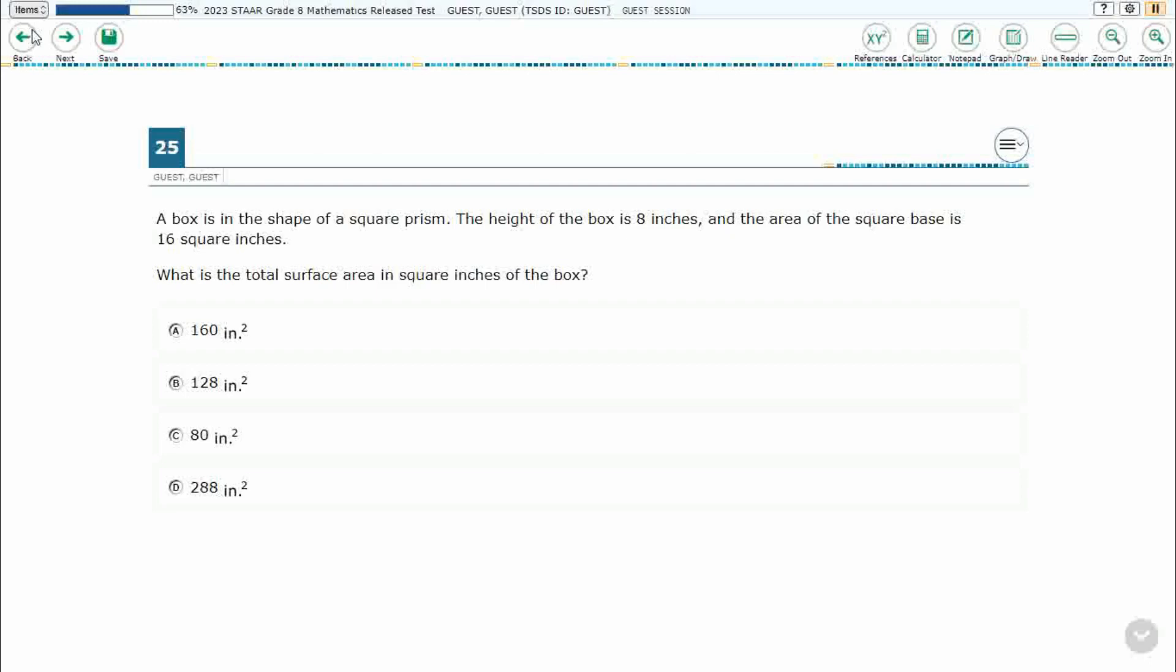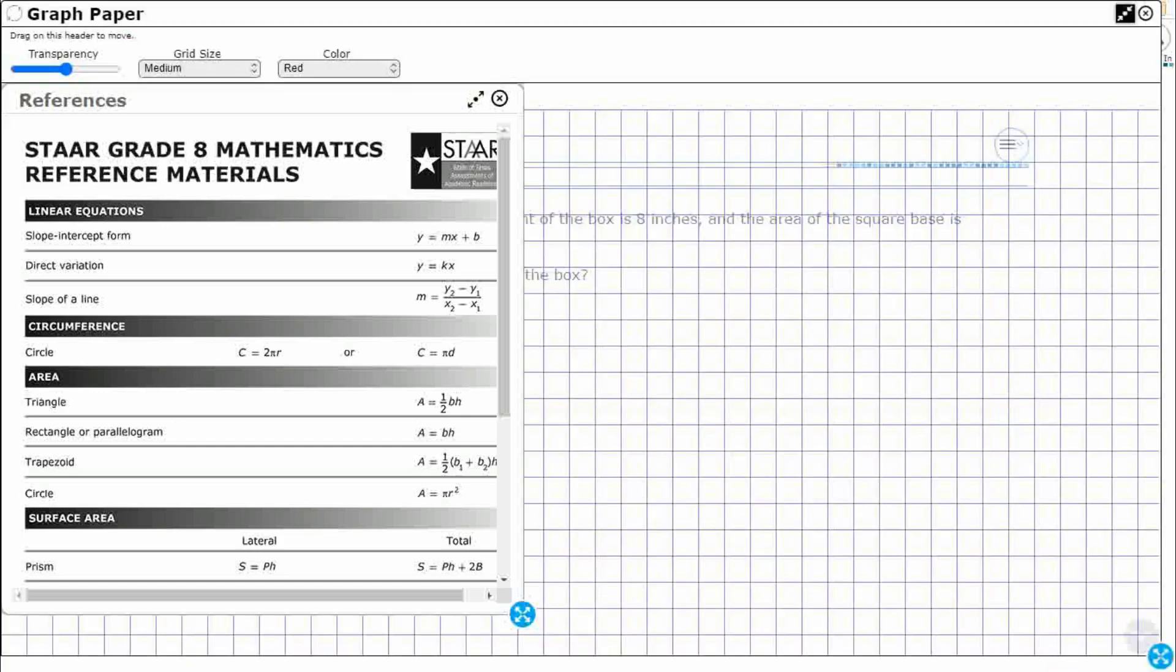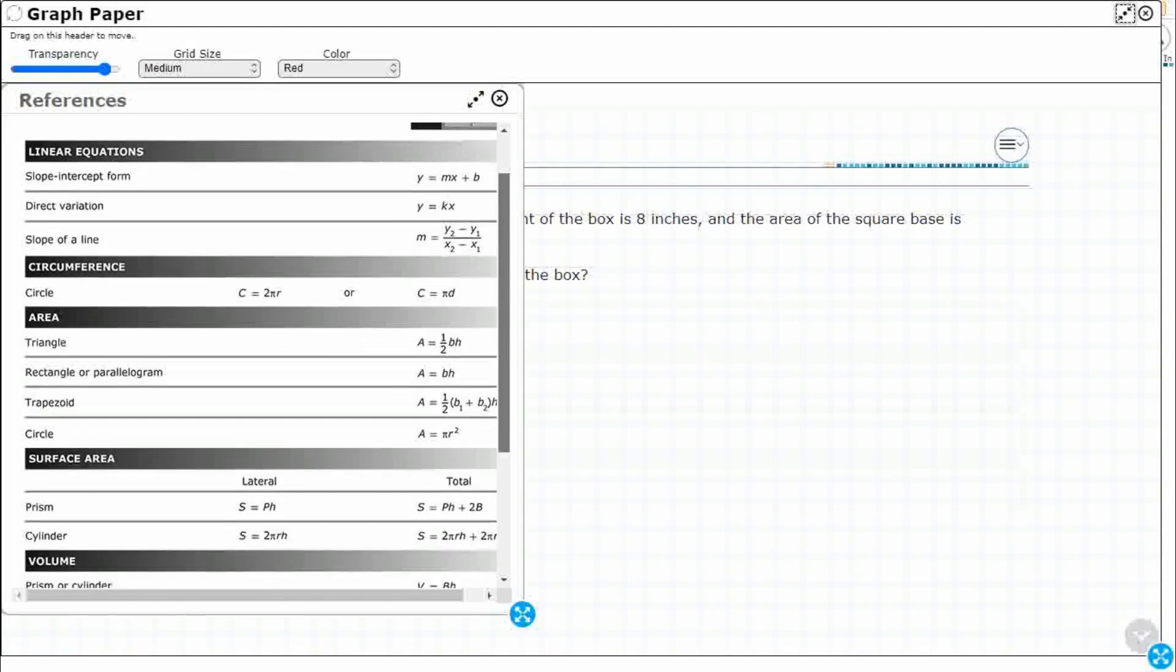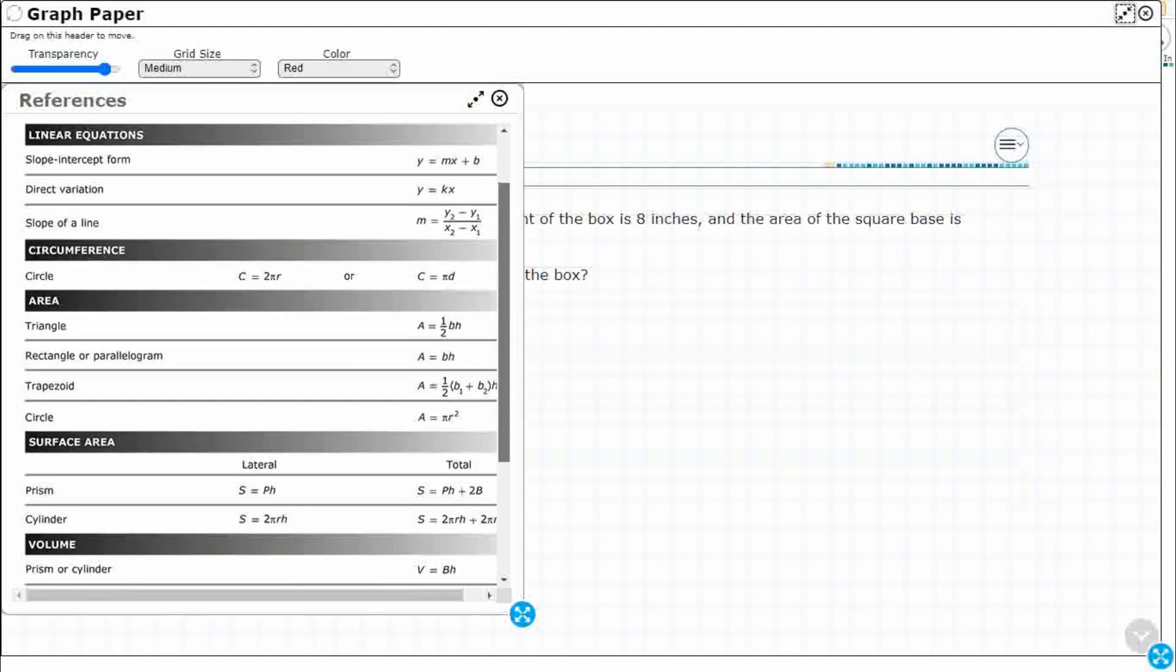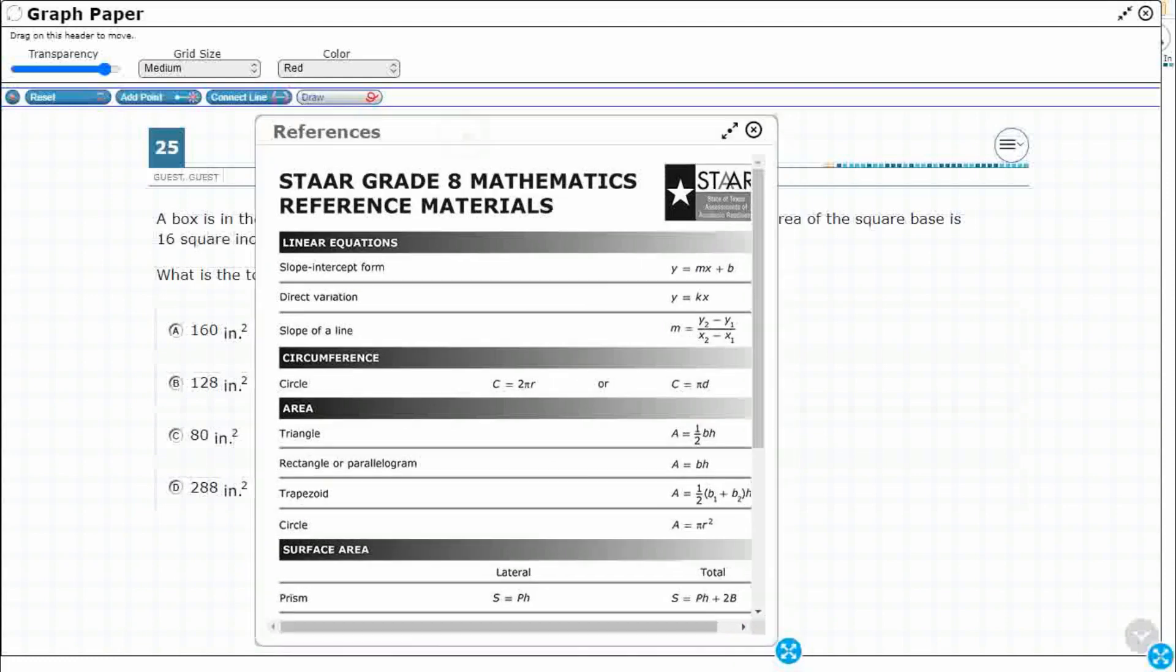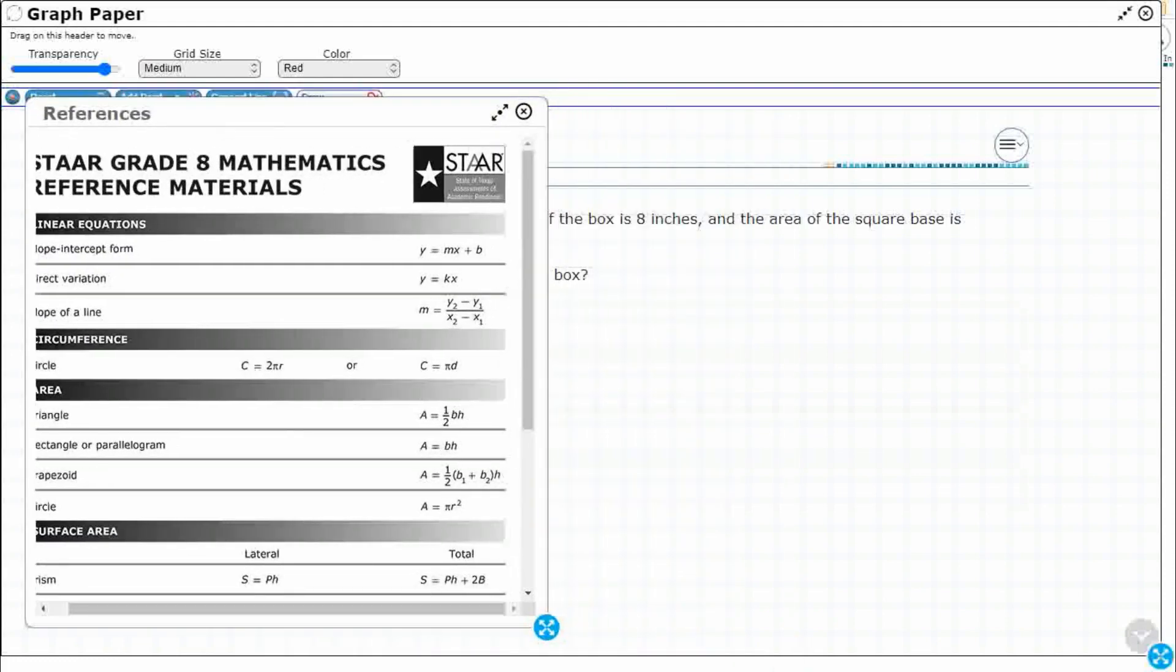So we have the box in the shape of a square prism. We have a height, we have an area. We're looking for total surface area. So let's go ahead and just bring out our reference materials here and let's look at our area. We've got surface area. So we're looking at a prism, not a cylinder. So I'm going to move that right there because right at the very bottom of the screen we see that prism and we need that total surface area, S equals pH plus 2B. That's what we're looking for.